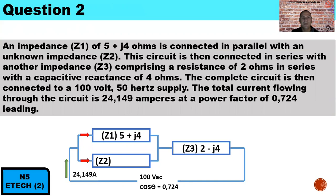For the second part of question 2: an impedance Z1 of (5 + j4) ohms is connected in parallel with an unknown impedance Z2. This combination is connected in series with Z3, which comprises a resistance of 2 ohms in series with a capacitive reactance of 4 ohms. The complete circuit is connected to a 100-volt, 50-hertz supply, and the total current is 24.149 amperes at a power factor of 0.724 leading. The negative sign on Z3 indicates a capacitive reactance, and the positive sign on Z1 indicates an inductive reactance.